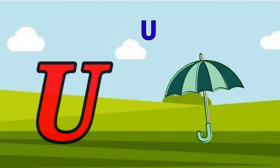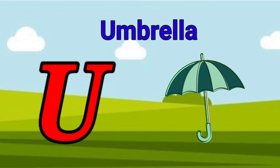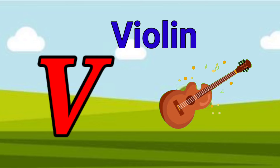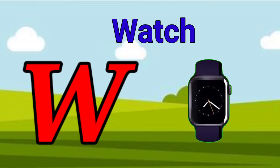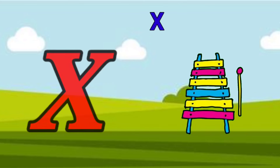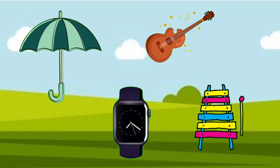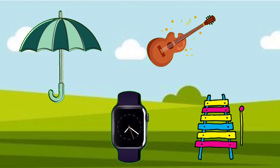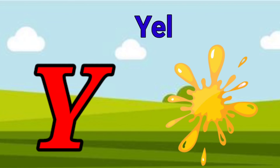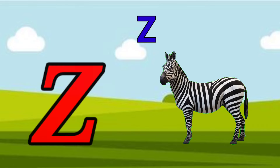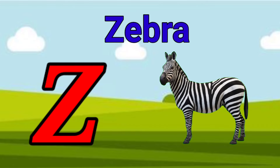U is for umbrella, u-u-umbrella. V is for violin, v-v-violin. W is for watch, w-w-watch. X is for xylophone, x-x-xylophone. Y is for yellow, ye-ye-yellow. Z is for zebra, z-z-zebra.